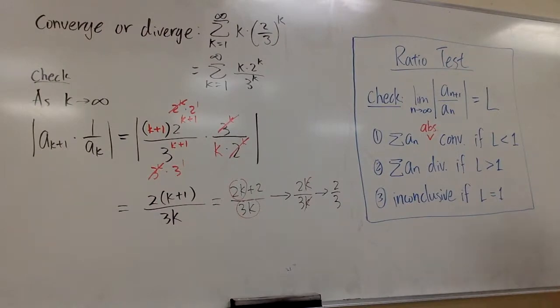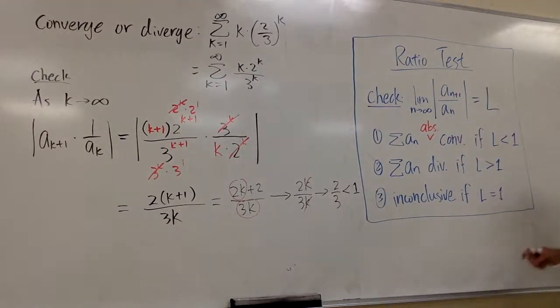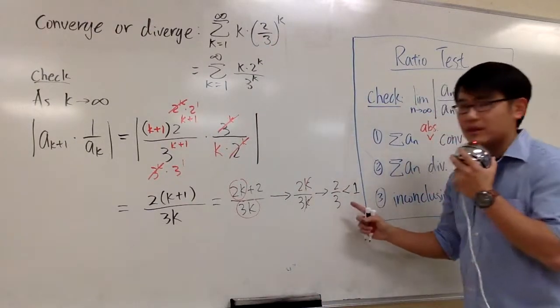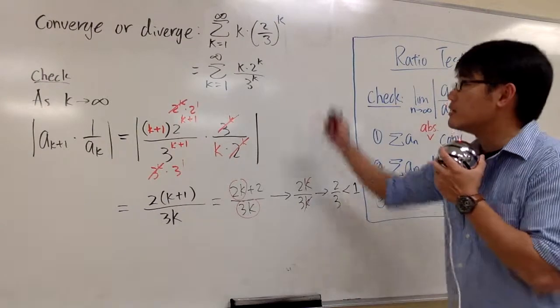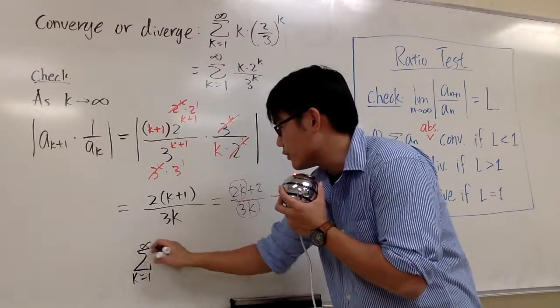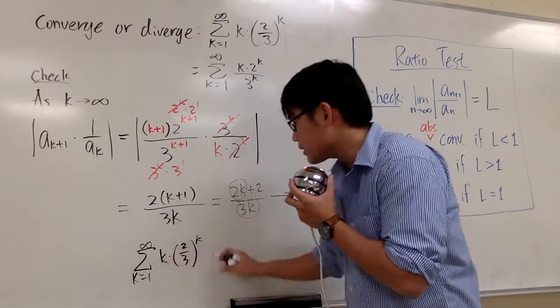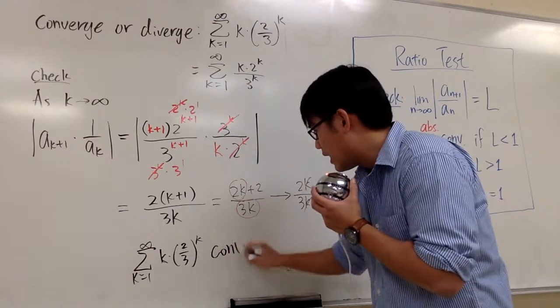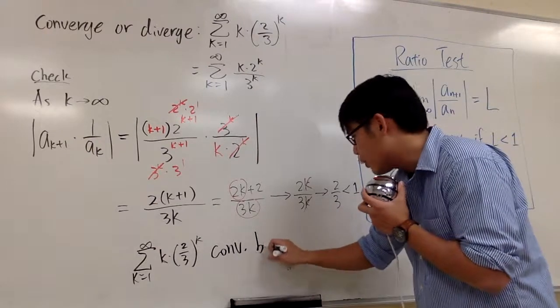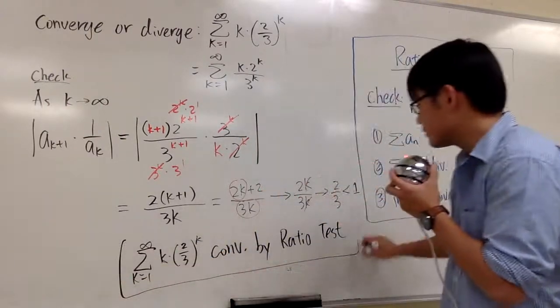This is the L. And more importantly, we have to know that 2 over 3 is less than 1. And then that's good, because we get to draw a conclusion that the original series converges whenever the L, the limit right here that we got, is less than 1. So my conclusion is going to be, when k goes from 1 to infinity, this series, k times 2 over 3 to the k's power right here, this series converges by ratio test.